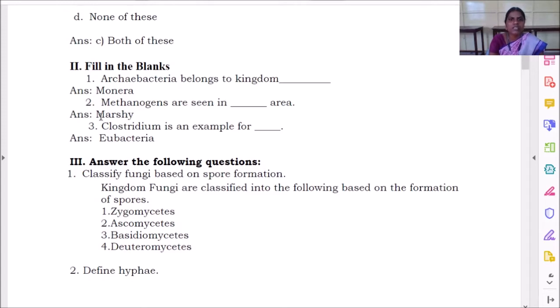There we can see large number of methanogens. Clostridium is an example for eubacteria. We have studied this. Hope you remember the classes. Answer the following questions.